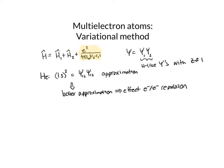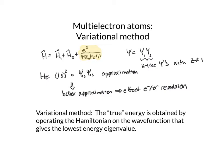Let's talk about how this variational method works. The basis of the variational method is that the true energy — the actual energy of the atom — is obtained by operating the Hamiltonian on the wave function that gives the lowest energy eigenvalue. We can see that our first guess for the wave function is not going to give us the lowest energy eigenvalue because we haven't minimized the effect of this electron-electron repulsion. So we need wave functions that minimize the effect of this electron-electron repulsion.